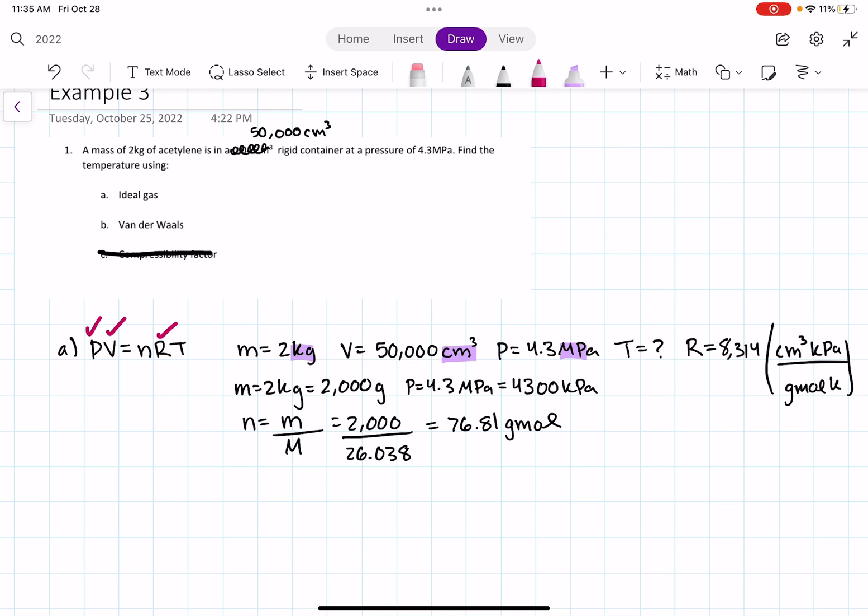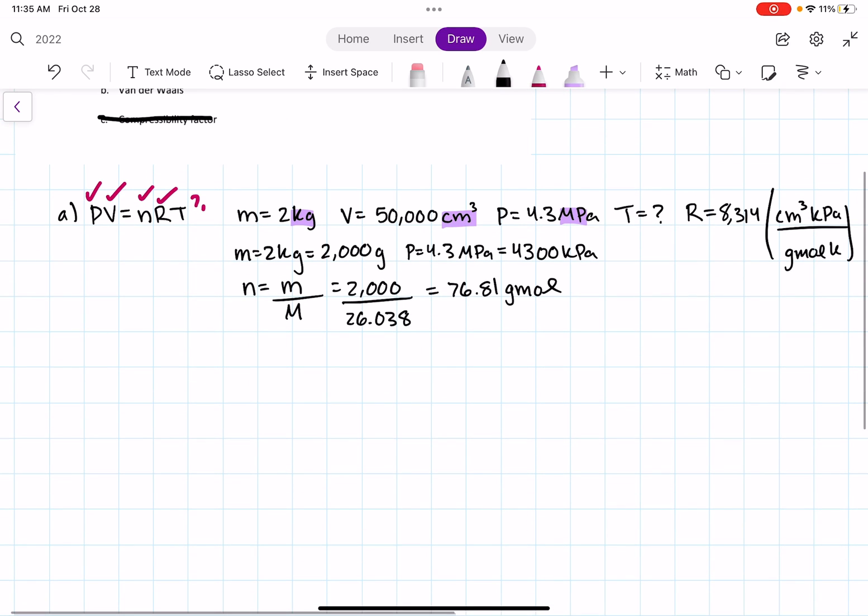So that means we have 76.81 gram moles. That's perfect. Now we have moles. And now we need to find our temperature. So I'm going to rewrite my equation. PV equals NRT.